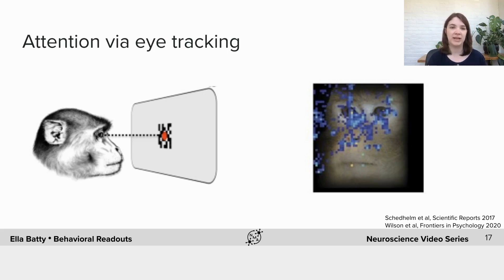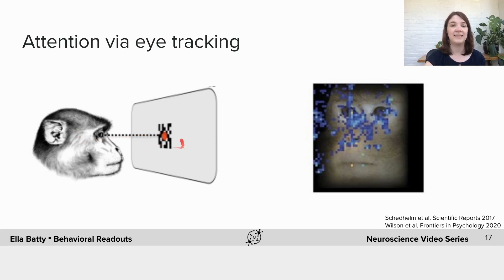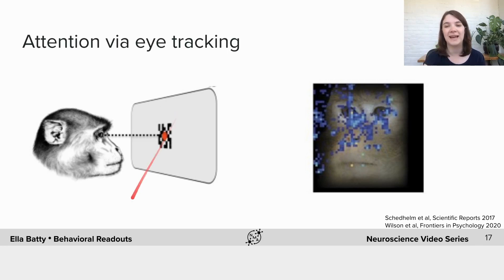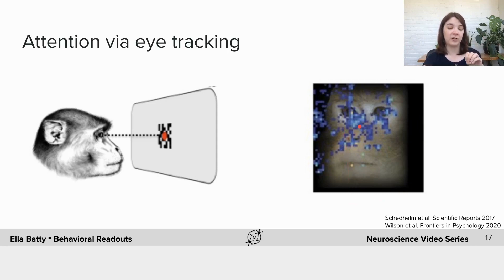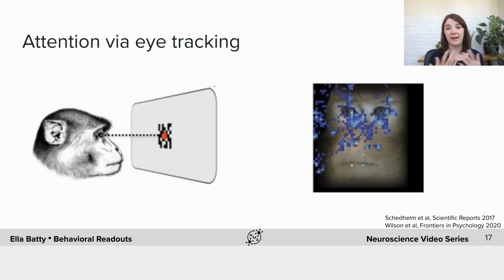One last behavioural readout I want to mention is using eye tracking to report where an animal is looking in the visual field. You can use eye tracking to tell exactly where a monkey is looking at an image, and that tells you what they're paying attention to or how they're parsing the image. As an example of what that has been used for: several studies showed images of other monkeys to a behaving monkey, and the blue overlay shows where the monkey looked as recorded by eye tracking. They saw that in general the monkeys really especially looked at the eyes and focused on them. And that's actually how humans parse images too — we tend to pay attention to the eyes — so we see that monkeys parse faces similarly to humans, at least in that one respect.